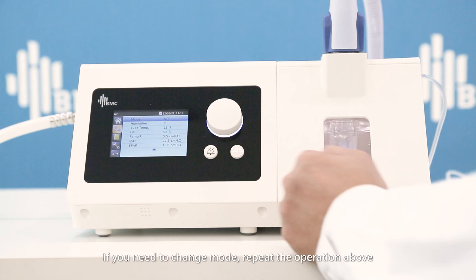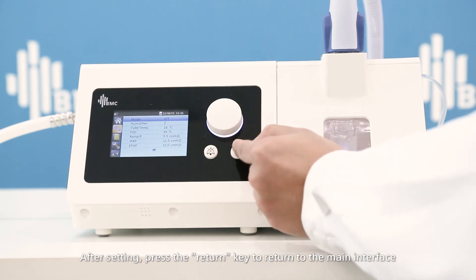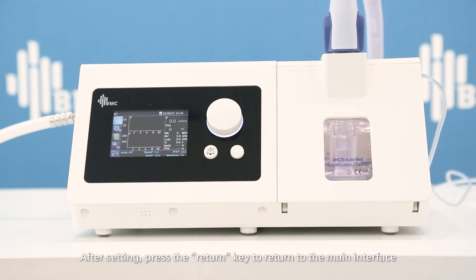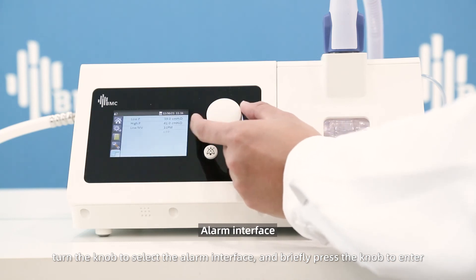If you need to change mode, repeat the operation above. After setting, press the return key to return to the main interface. Turn the knob to select the alarm interface.